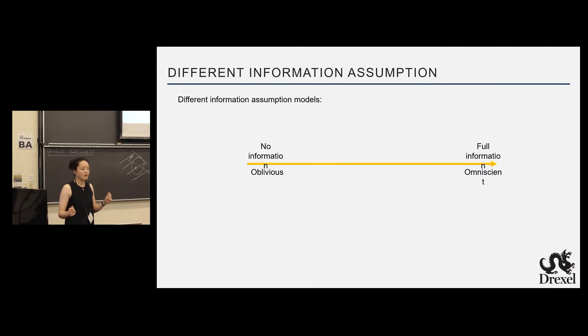So to kind of demonstrate how information plays a role in this decentralized mechanism line settings, let's consider some different prior works that have considered these different information assumptions. On this fully decentralized settings, we have oblivious protocols we call, which has no information about anything. You don't, it doesn't know the graph. It doesn't know the cost functions or the set of agents. They don't know anything. For example, the equal share that we just described doesn't need to know anything, right? No matter how many agents are in what graph, what cost functions, you're just going to equally share it. It's oblivious. It's very decentralized. Very good.